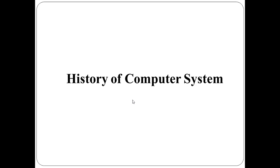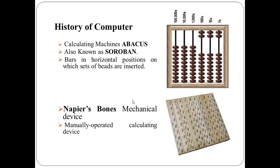Now let us begin with the History of Computer System. Until the development of first generation computers which are based on vacuum tubes, there had been several developments in computing technology related to mechanical computing devices. The key developments are as follows.